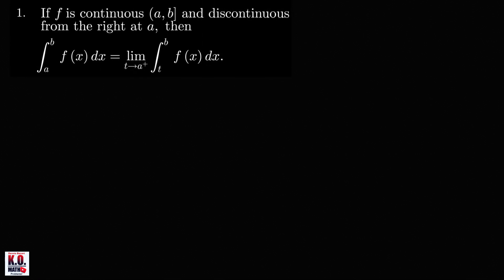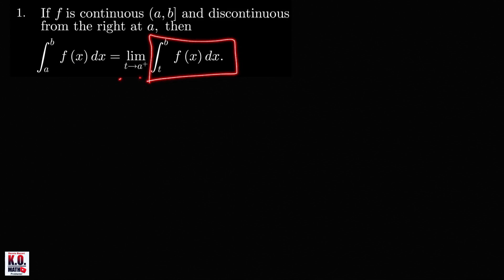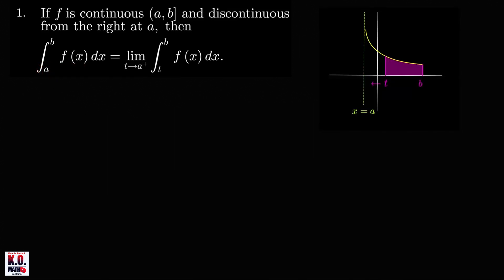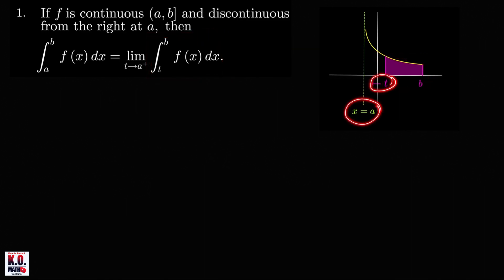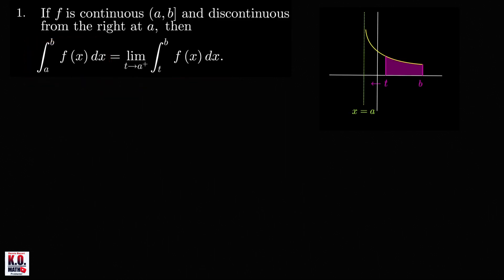The first case is if the integrand is continuous on the half-open interval a, b and is discontinuous from the right at a, then to evaluate this integral, we find the limit of this integral as t approaches a from the right. If we have an integrand with an infinite discontinuity at a, we find the integral from t to b and take the limit as t approaches a from the right. If this limit exists, we say the improper integral is convergent; otherwise, it is divergent.